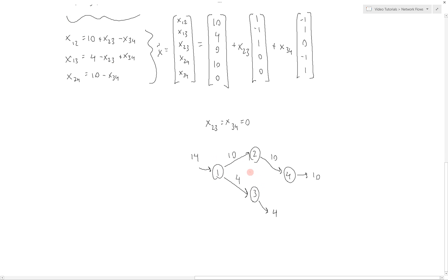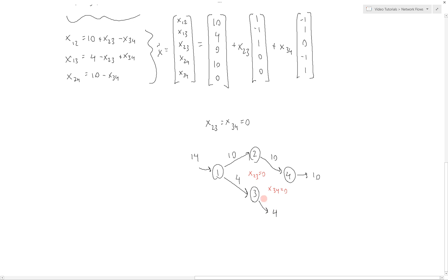With x23 = 0 and x34 = 0, this solution makes perfect sense. We have 14 units coming in: 10 are leaving along one branch and 4 along another for a total of 14. 4 units arrive at node 3, which demands 4. And 10 travel from node 2 to node 4, which demands 10. So we've met all of our supply with our demand along valid branches. We can create as many solutions as we want by setting x23 and x34 to non-zero values, getting other valid traversals — though none is really better than another.